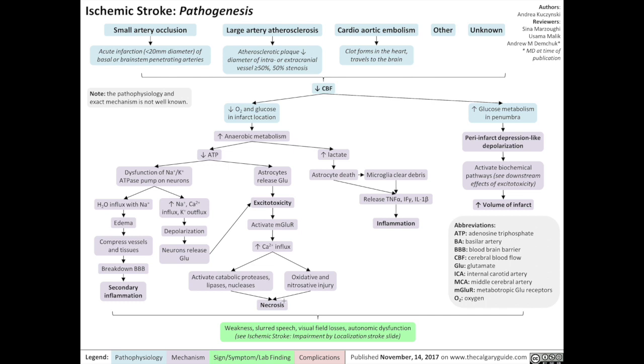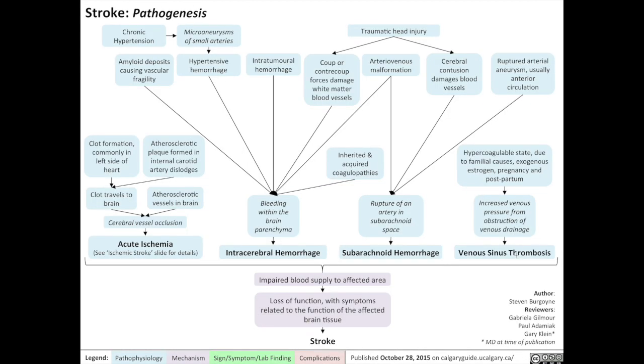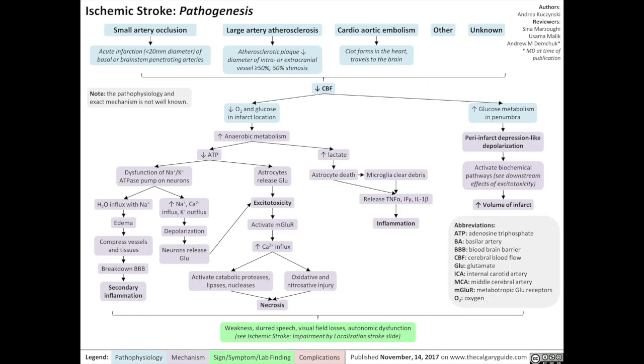And so this combination of necrosis, inflammation, and the negative spiral that contributes to increasing the volume of the infarct, all add up to cause the weakness, slurred speech, visual field losses, and autonomic dysfunction that are characteristic of ischemic stroke. And there you have it, two slides that summarize the pathogenesis of stroke, both stroke in general and ischemic stroke. If you found these two series of Calgary Guide slides useful, please like this video and subscribe to our channel for more concise summaries about disease pathophysiology. Thank you for your support and see you in the next video.